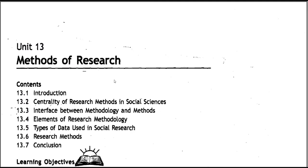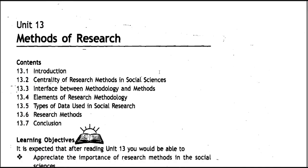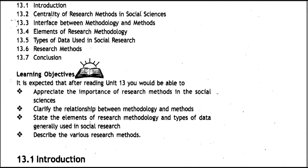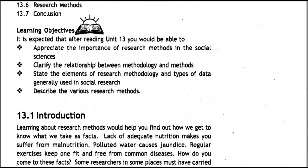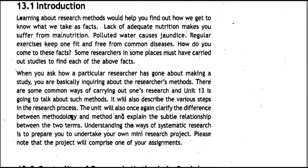Unit 13: Methods of Research. Contents include 13.1 Introduction, 13.2 Centrality of Research Methods in Social Sciences, 13.3 Interface between Methodology and Methods, 13.4 Elements of Research Methodology, 13.5 Types of Data Used in Social Research, and 13.6 Research Methods. The learning objectives are: after reading Unit 13, you should be able to appreciate the importance of research methods in social sciences, clarify the relationship between methodology and methods, state the elements of research methodology, and the types of data generally used in social research.